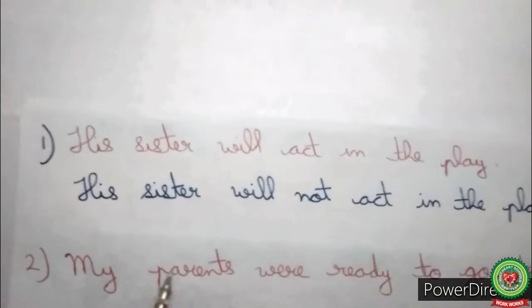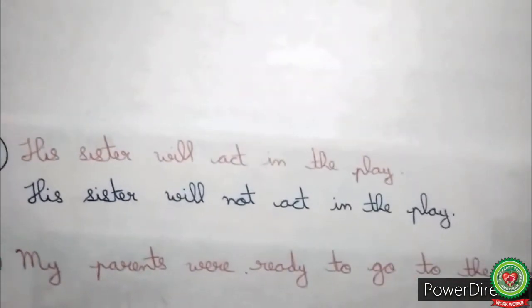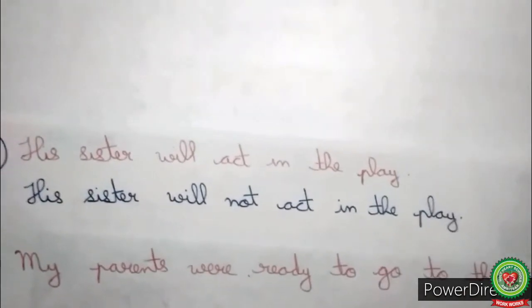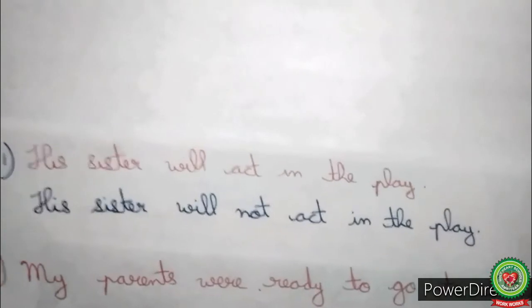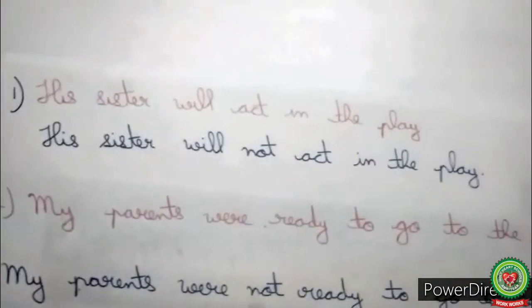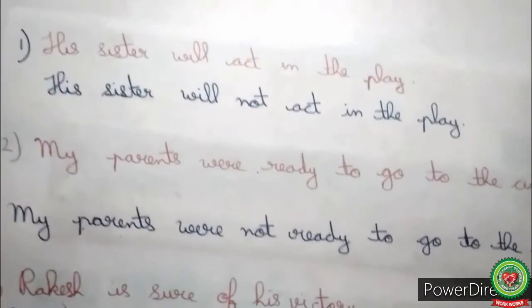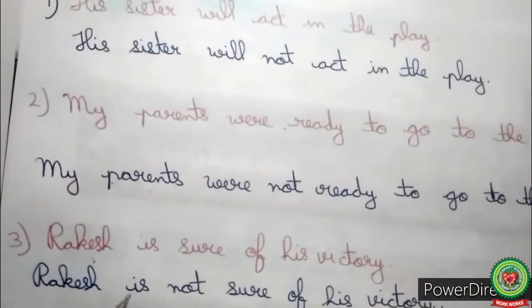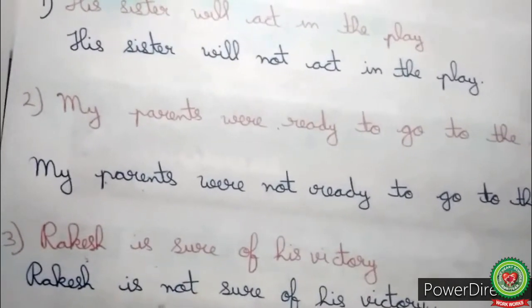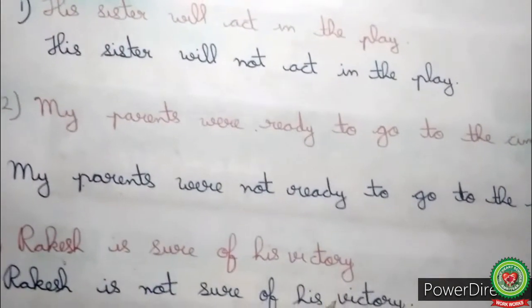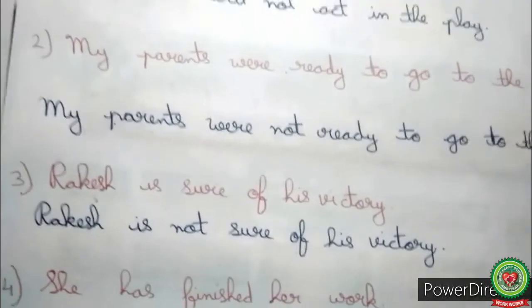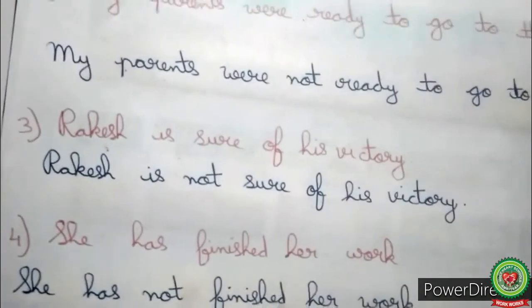For the second example: 'My parents were ready to go to the cinema.' We add 'not' and the sentence becomes: 'My parents were not ready to go to the cinema.' Next: 'Rakesh is sure of his victory.' By adding 'not,' the sentence becomes: 'Rakesh is not sure of his victory.' And for 'She has finished her work,' adding 'not' gives us: 'She has not finished her work.'